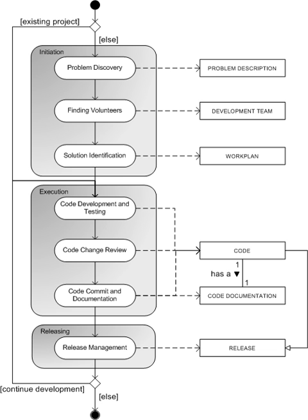It is hard to run an open-source project following a more traditional software development method like the waterfall model, because in these traditional methods it is not allowed to go back to a previous phase. In open-source software development, requirements are rarely gathered before the start of the project; instead they are based on early releases of the software product. As Robbins describes, besides requirements, volunteer staff is often attracted to help develop the software product based on the early releases.